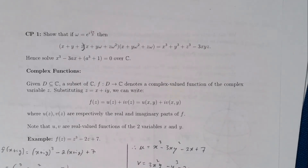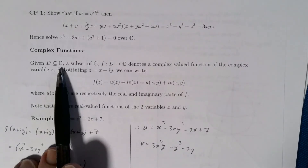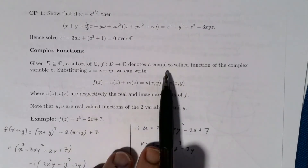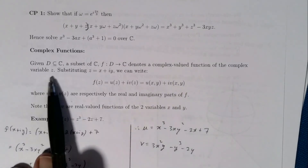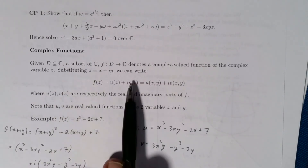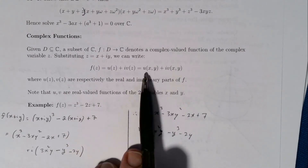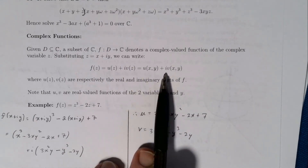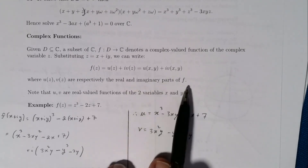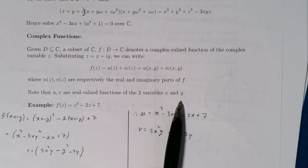Now I want to say a bit more about complex functions. We take D as a subset of the complex numbers and have a function f mapping this region D into the complex numbers — a complex-valued function of the complex variable z. If you substitute z = x + iy into your function you can split f into a real part u (x's and y's with no i) plus i times another function v of x and y, the imaginary part. The u and v are called the real and imaginary parts of f, and are real-valued functions of two real variables x and y.